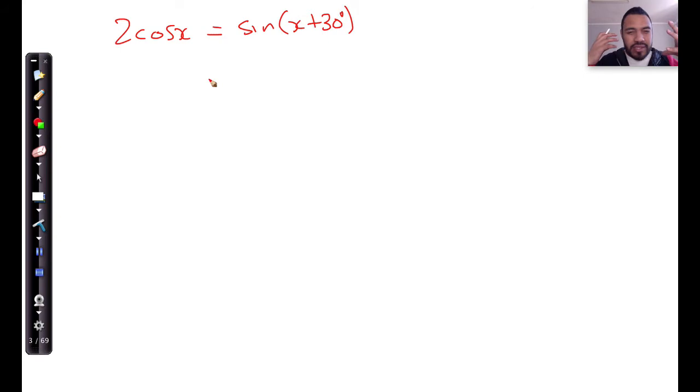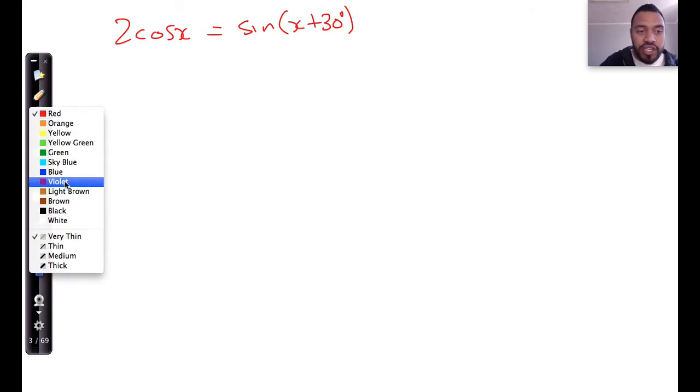Now here's one that requires quite a bit of foresight, because I've got a coefficient here. If I didn't have the coefficient, I could easily just turn this into something that had the co-ratio there.